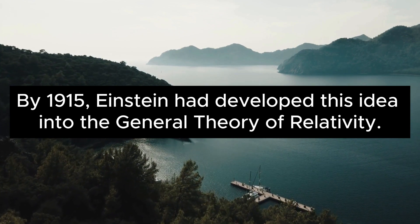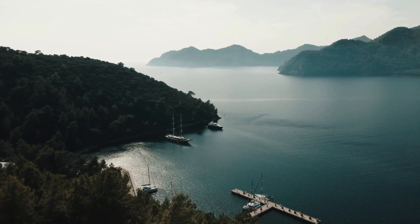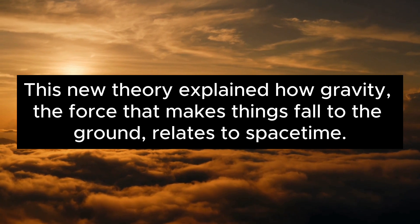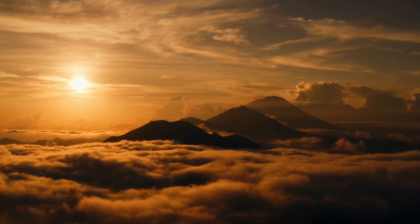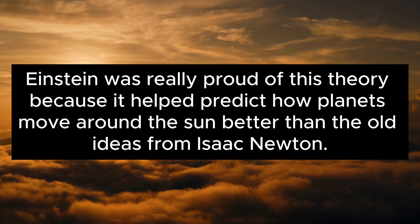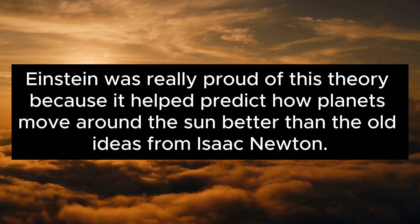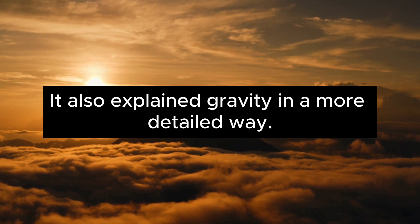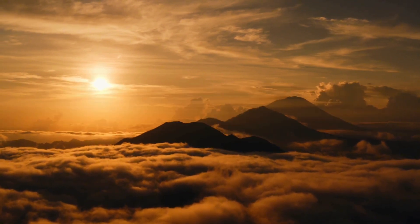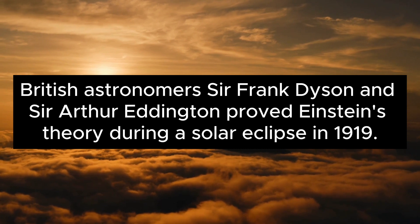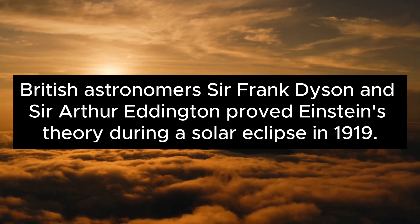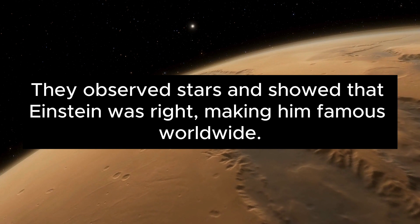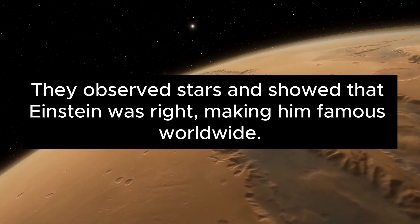By 1915, Einstein had developed this idea into the general theory of relativity. This new theory explained how gravity — the force that makes things fall to the ground — relates to space-time. Einstein was really proud of this theory because it helped predict how planets move around the sun better than the old ideas from Isaac Newton. British astronomers Sir Frank Dyson and Sir Arthur Eddington proved Einstein's theory during a solar eclipse in 1919. They observed stars and showed that Einstein was right, making him famous worldwide.